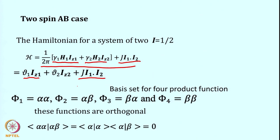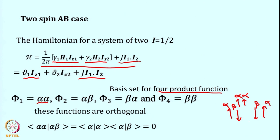For such a system we can write the basis set as four product functions. The two spins can each be in alpha or beta states, giving: alpha-alpha (both up spin), alpha-beta, beta-alpha, and beta-beta. These four basis functions are orthogonal — the inner product of, say, alpha-alpha and beta-alpha is zero.